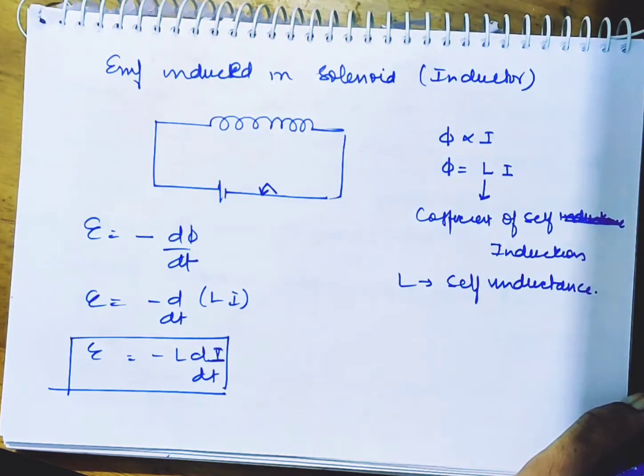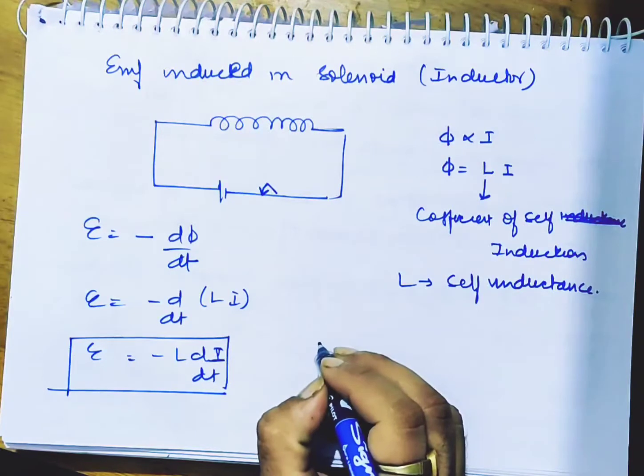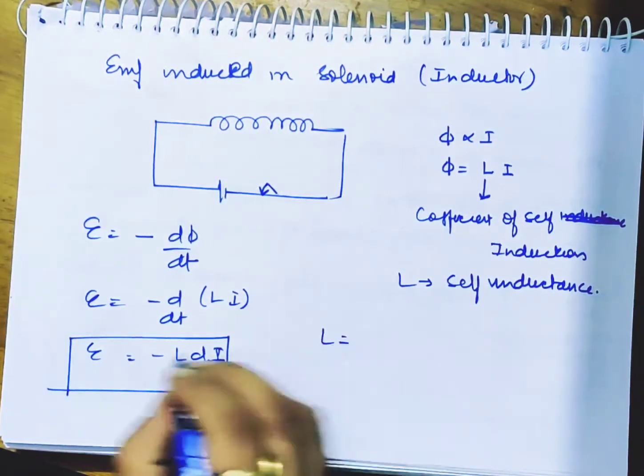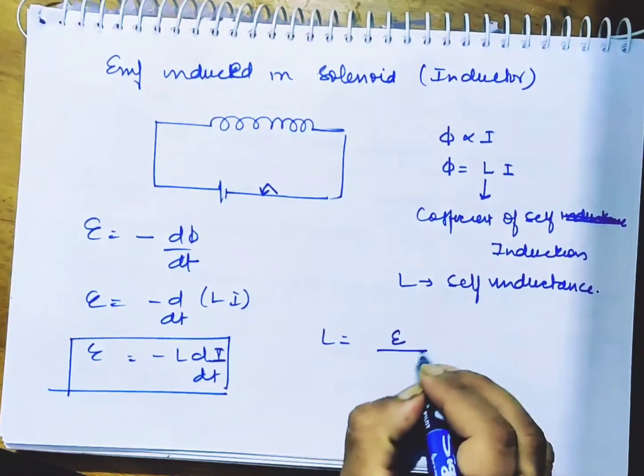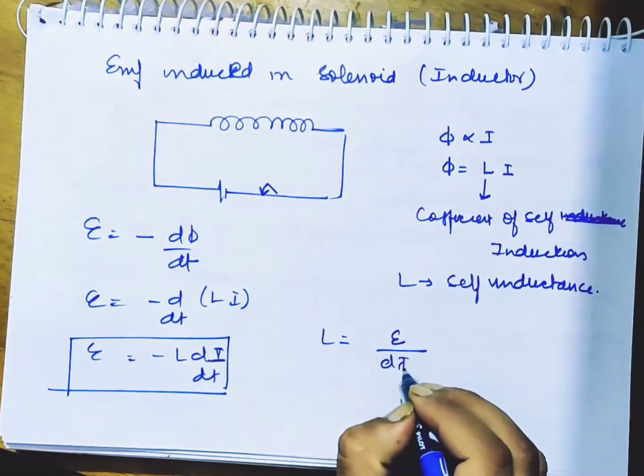We have L equal to - let's learn the general definition of self-inductance in terms of mathematical treatment. We have L is equal to ε divided by di/dt.